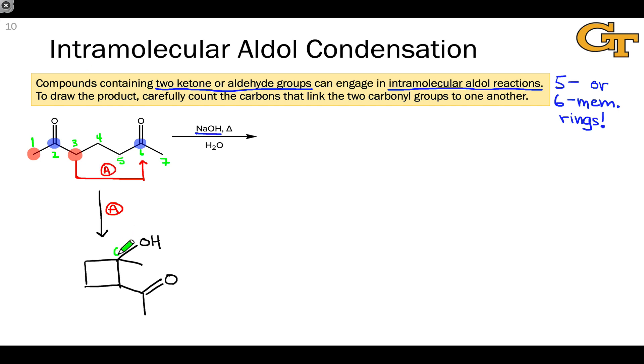And I'll go ahead and number those carbons again to make this clearer. So carbon 6 was the electrophile. 7 was the methyl group linked to it. The nucleophile was carbon 3. And here we see carbons 4 and 5. Here's carbon 2 and carbon 1 in this product.